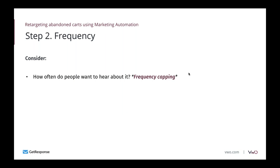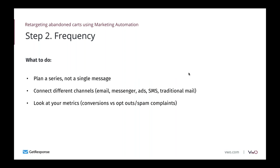It's also worth considering frequency capping, used with PPC ads. With emails, when connecting different marketing channels, consider how often you retarget your users so you don't send too many messages simultaneously. Plan a series, not a single message — don't assume you'll convert everyone with one email. When connecting different channels — email, messenger ads, SMS — look at frequency capping so you're not sending too many messages within one given channel.